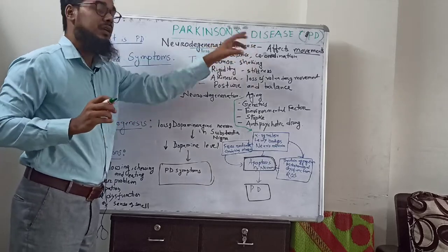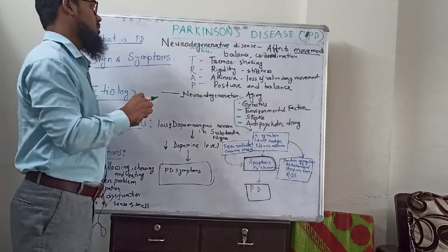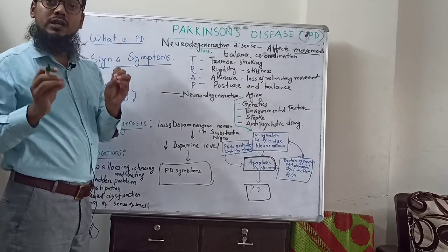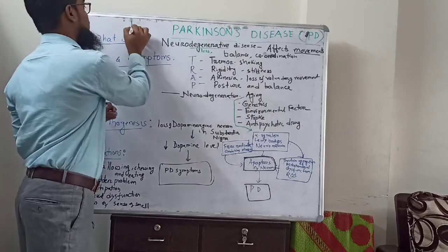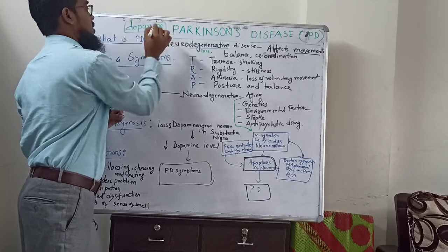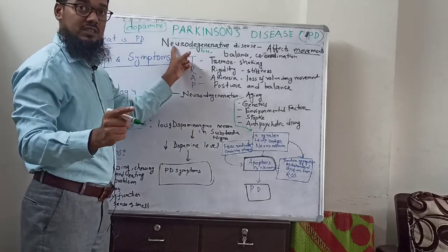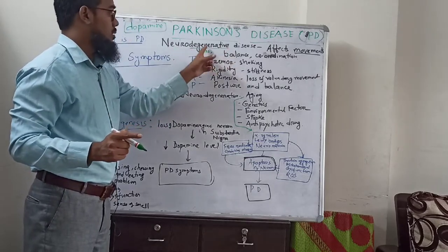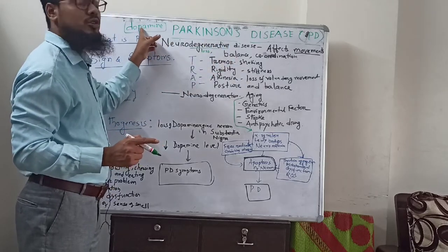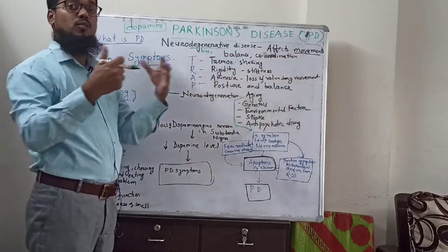So what happens? Some neurons will be destroyed — destruction of neurons occurs. These are the neurons which are responsible for producing the neurotransmitter called dopamine. So Parkinsonism disease is a neurodegenerative disease involving the loss or destruction of neurons mainly responsible for producing dopamine, and it affects movements.